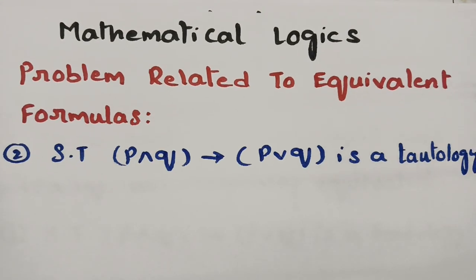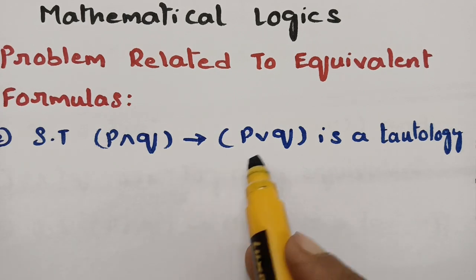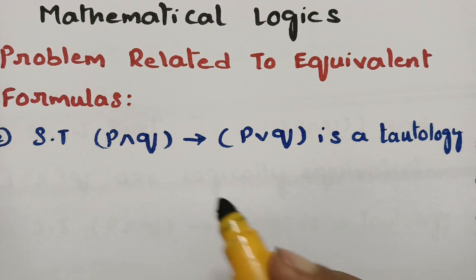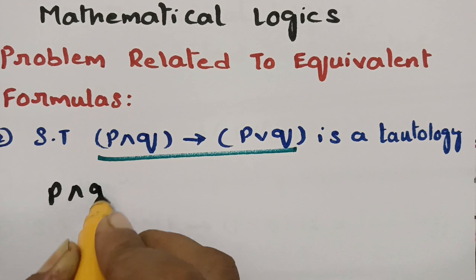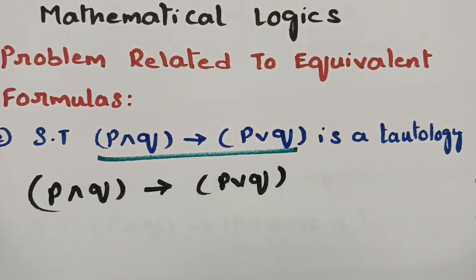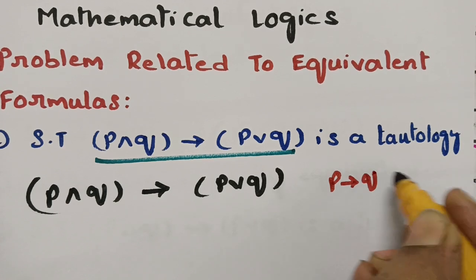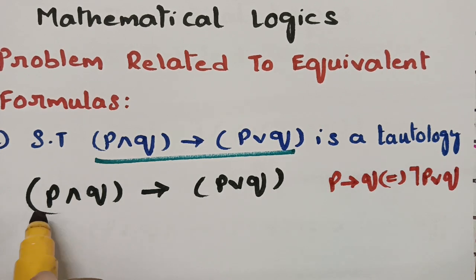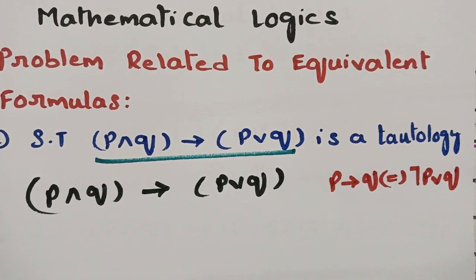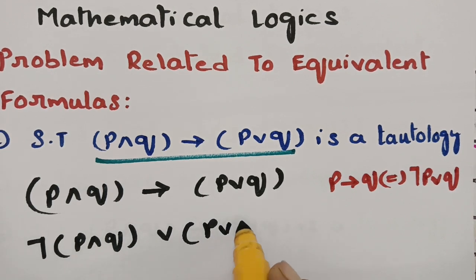The next problem: we have to show that (P and Q) implies (P or Q) is a tautology, meaning the whole expression must equal true. I will use the implication equivalence formula: P implies Q is equivalent to negation P or Q. Applying this, the expression becomes: negation(P and Q) or (P or Q).